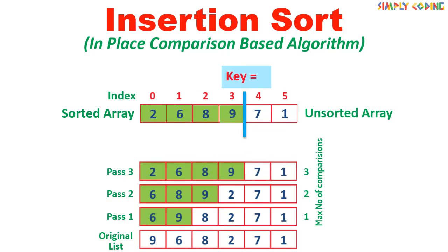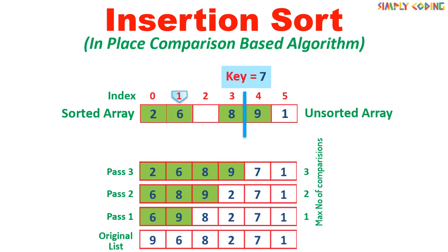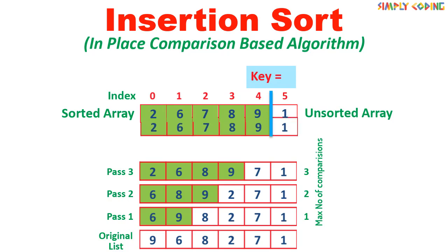In the next pass, it again starts by taking the first element of unsorted array and copying it in the key. It then starts comparing backwards with sorted array till it finds a value lesser than it or till the end of sorted array is reached. Here first 9 is compared with 7. It is higher, so it is moved right. Next 8 is also higher, so it is shifted right. Then 6 is compared. It is smaller, so it stops and copies 7 in between 6 and 8. This completes this pass.